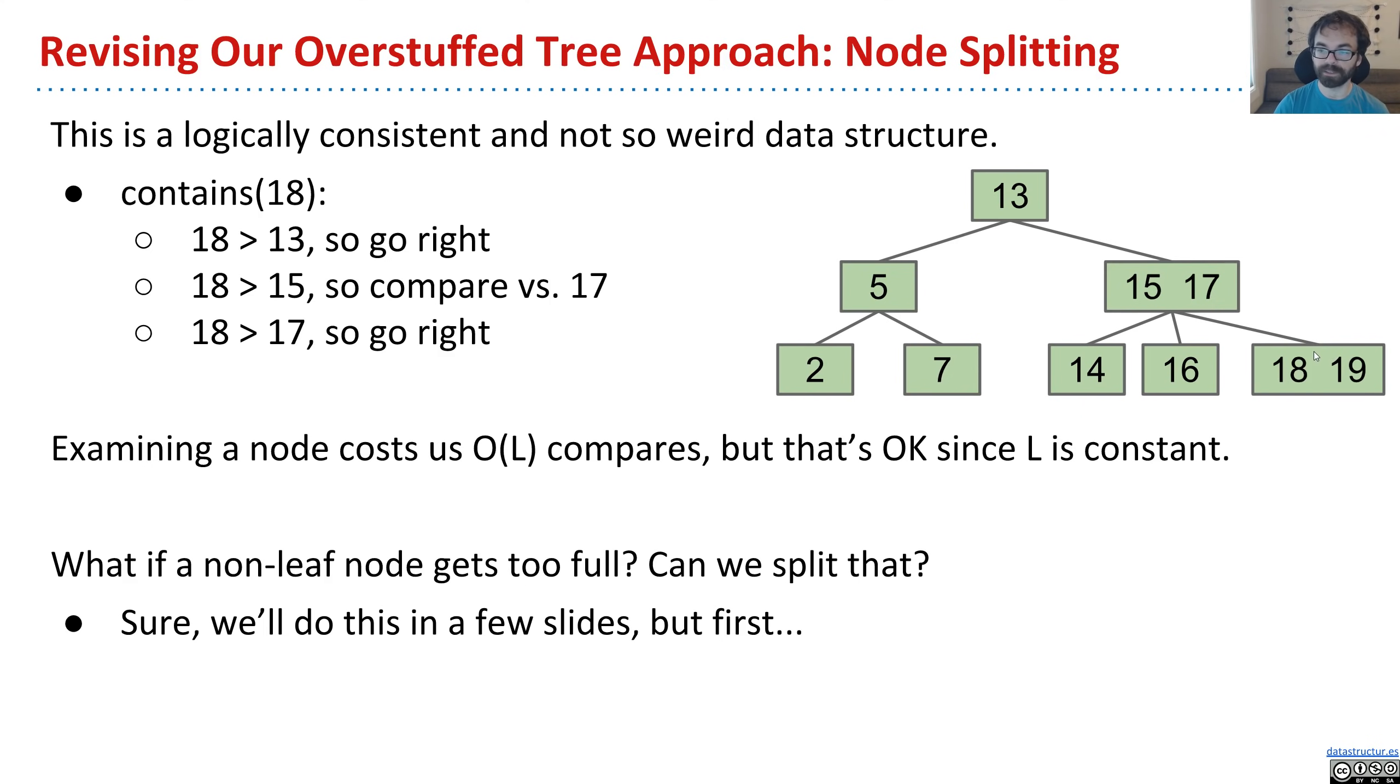And then we'll search this node. So the downside of this approach is that looking at each node costs us L compares, because there's up to L values in each node. But that's OK, because L is a constant we set ahead of time. So whereas before, we had this issue where a node can get really, really big, and we have to search every single item in the node, here now, L is constant.